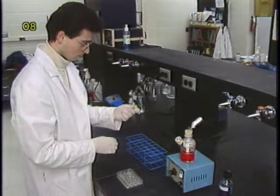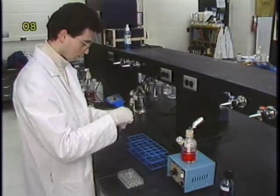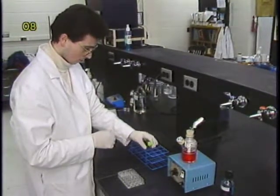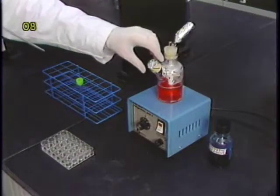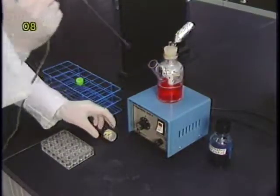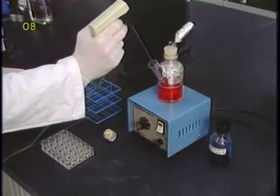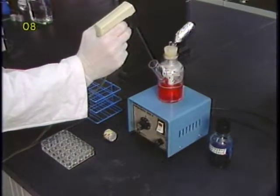The cell concentration in the microcarrier is typically measured by counting the nuclei. Before the sample is withdrawn from the spinner culture, make sure that the culture is well mixed. Usually one to two milliliters of sample are sufficient for the cell counting.